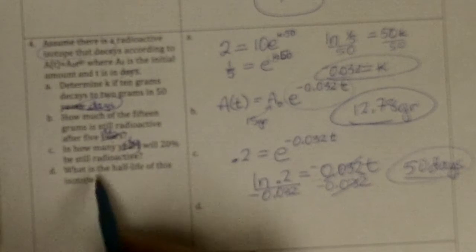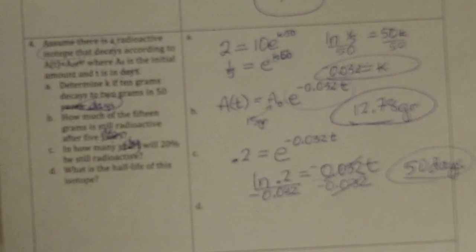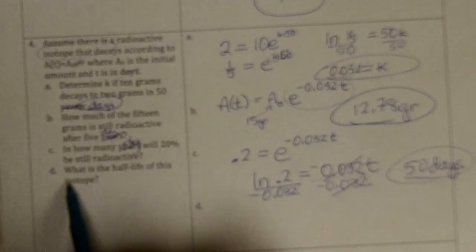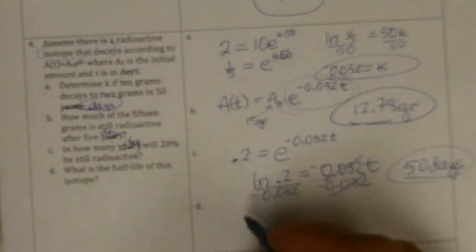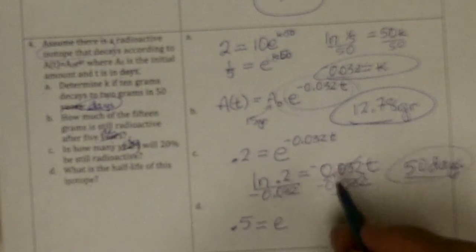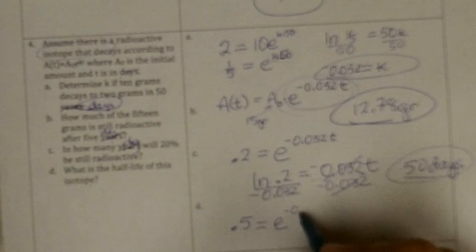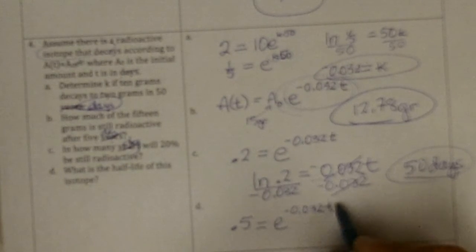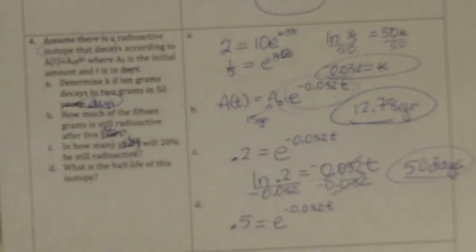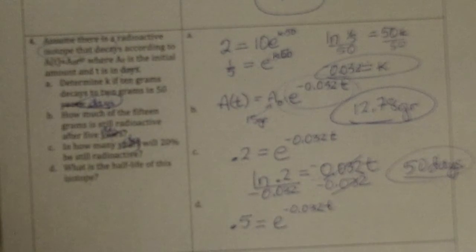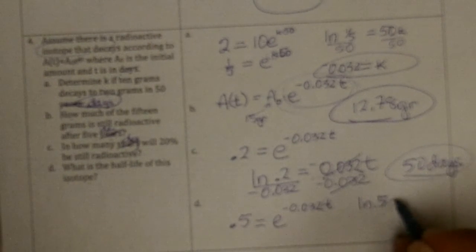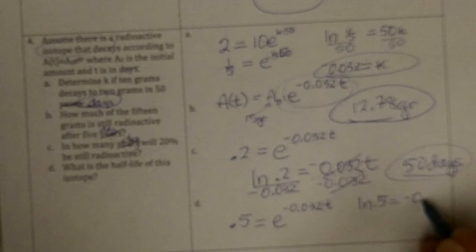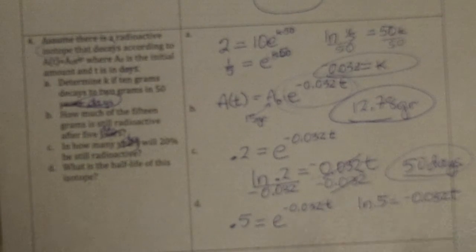And finally, what is the half-life of this isotope? Not asymptote, isotope. So then we want this to come out to be a half. So we just need to have 0.5 be e to this decay constant, negative 0.032, times this. This would give us the half-life. So I'm trying to find a power again, so I change it to a log. And it would be ln 0.5 equals negative 0.032t, where t would be the half-life.